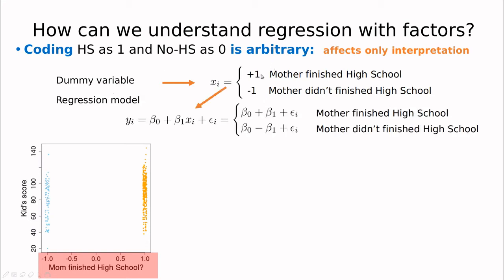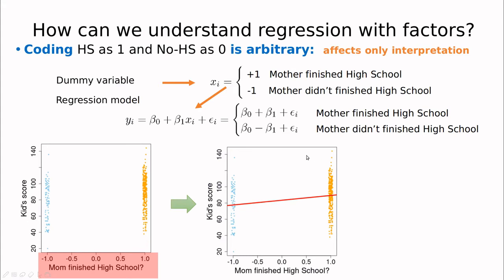Again, if we replace these numbers here, you can see that now regression has a different meaning. So now for the mother didn't finish high school class, the kid's score is simply beta 0 minus beta 1, and for the other group is beta 0 plus beta 1. So now the interpretation is slightly different. Now this is the average value, this is the other average value, and now beta 0 is somewhere in the middle. So now beta 0 has interpretation of what's the average output ignoring the high school effect.